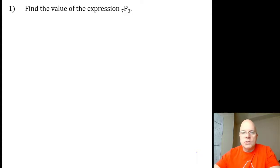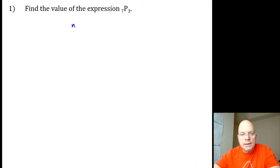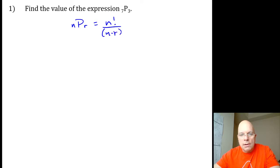We'll do it with some slightly smaller numbers, the same idea. The permutation of N items taken R at a time is N factorial over N minus R factorial.